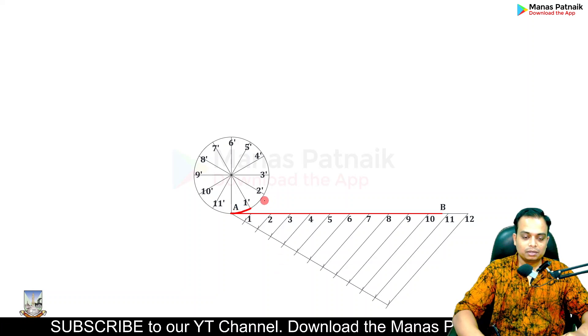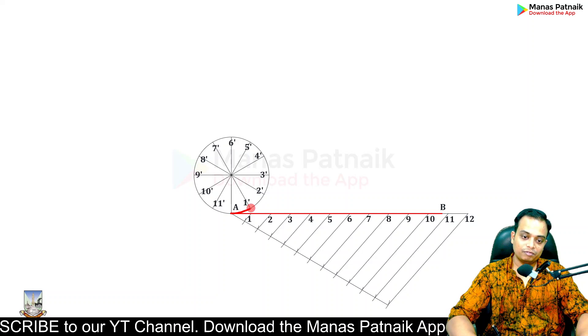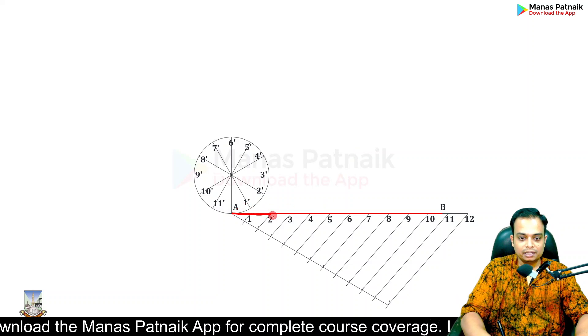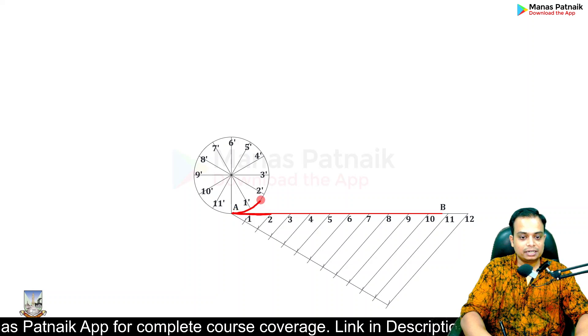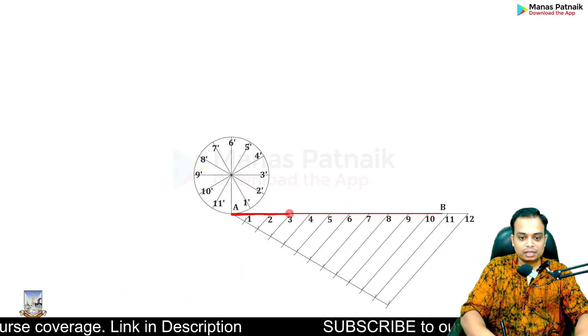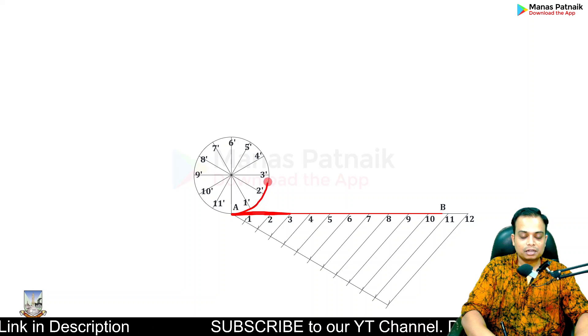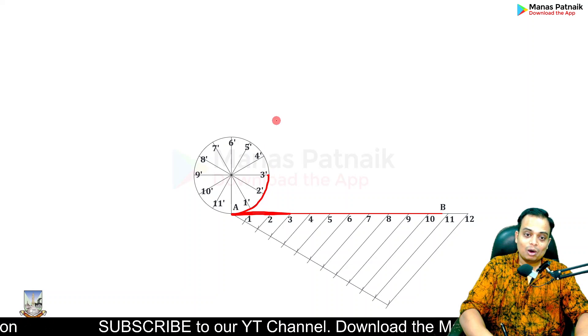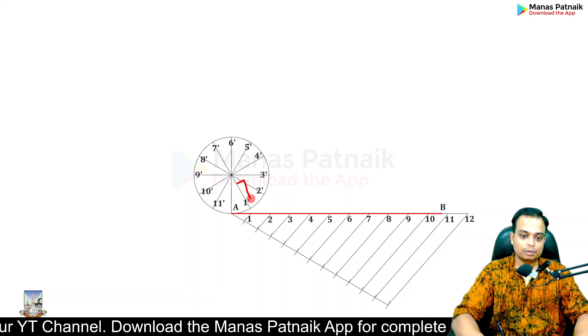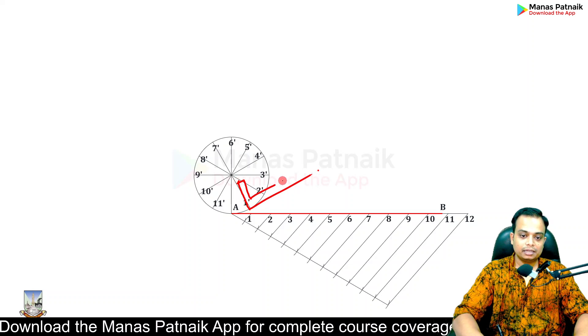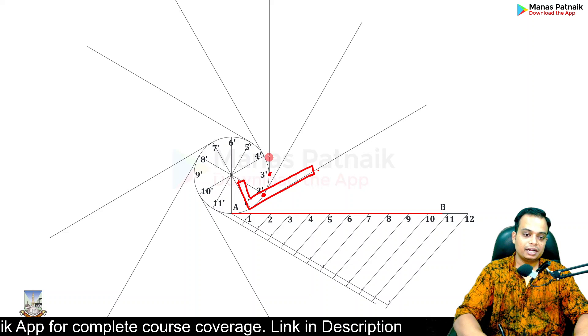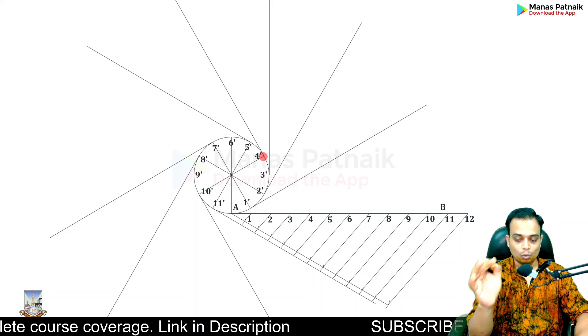When this much portion of the string is wound, the remaining portion can be represented with the help of this tangent. When this much portion comes into contact, then this 2 is going to coincide with 2', and the remaining portion can be shown by this tangent. When this much portion of the string comes into contact with the circumference, the remaining portion can be represented along this tangent line. You've got to make tangents through all of these points. Just keep the smaller scale of your compass and the larger scale will automatically point in the direction of the tangent. Repeat this for 2', 3', 4'.